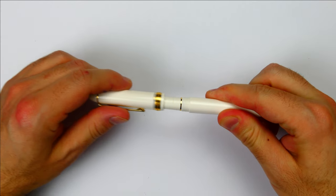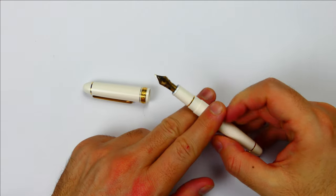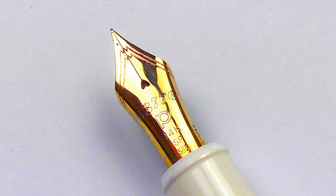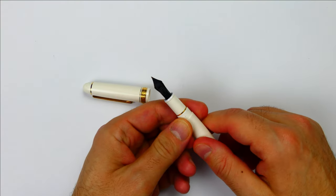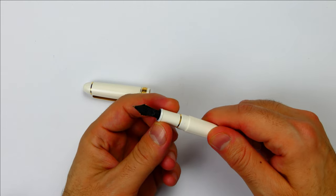The cap twists off in one and a half turns and reveals the 14k gold number 6 nib made in-house for Platinum. You can see the nice logo of the company on it, the number 3776, and SF for soft fine. The nib and feed are friction fitted in the section and here you can see the plastic feed.